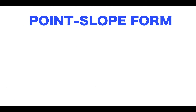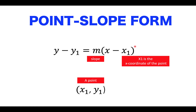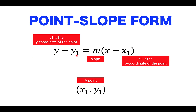Now let's go to the next form: the point-slope form. The equation is y minus y₁ equals m times the quantity x minus x₁. Here, m is the slope, and we are given a point with coordinate (x₁, y₁), where x₁ is the x-coordinate and y₁ is the y-coordinate of that given point.